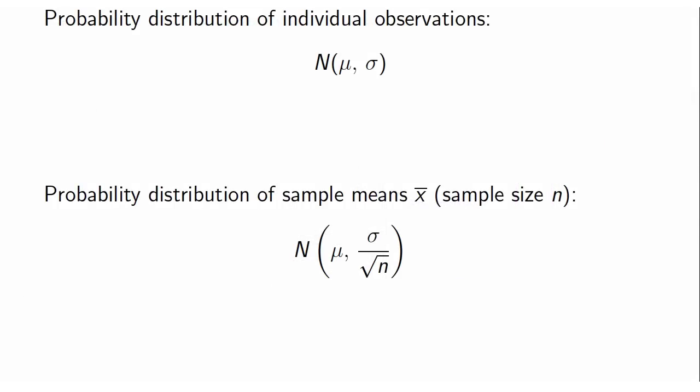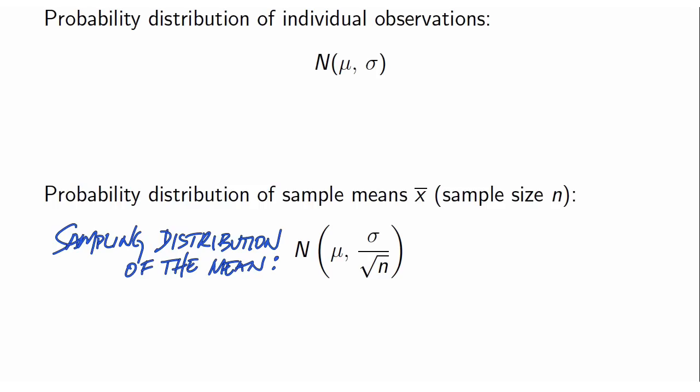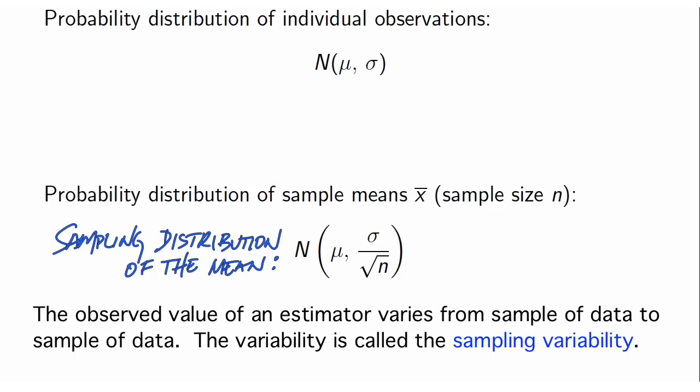Suppose we assume that the individual observations have a normal distribution with a mean of mu and a standard deviation of sigma. Then the sampling distribution of the mean has a normal distribution, also with a mean of mu and a standard deviation of sigma divided by the square root of n, where n is the size of our samples. It describes how the observed value of the sample mean varies from sample to sample of data. That variability is called sampling variability, and in the case of the sampling distribution of the mean, it is given by sigma divided by the square root of n.